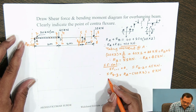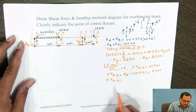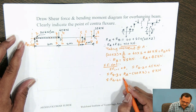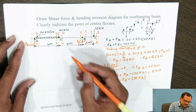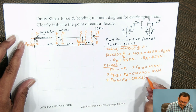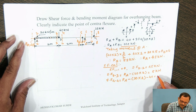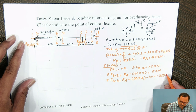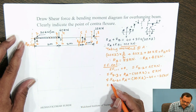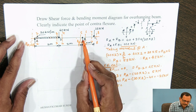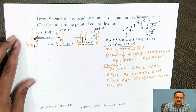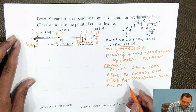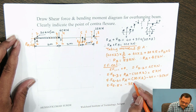At section 4-4, referring left side: R_A upward (positive) minus UDL 20 into 2 (downward, negative) minus point load at D (downward, negative) gives shear force at 4-4 equals minus 35 kN. Between D and B there is no load, so shear force remains constant and the diagram remains horizontal. Therefore, shear force at 5-5 is also minus 35 kN.